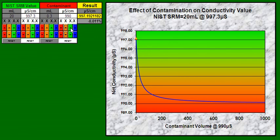What's happened now is that the calculation for the result shows that the impact of that 0.3 milliliters at a value close to the SRM, combined with the 20 milliliters of the SRM at its reported value, comes out to a very close value but somewhat short of that value — 997.19 as opposed to the 997.3 reported value.